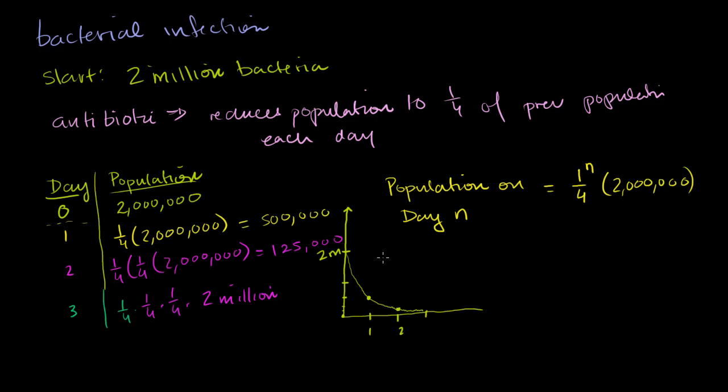Now, they also ask us: find the size of the bacteria population 10 days after the drug was first taken. So after 10 days, that's just n equals 10. So it's going to be equal to one-fourth to the tenth power times 2 million. And let's take our calculator out to calculate this.